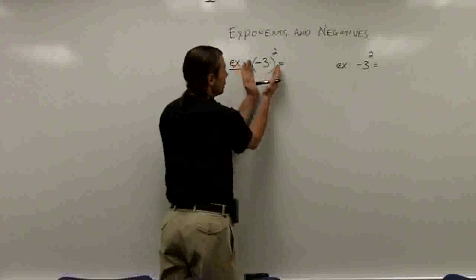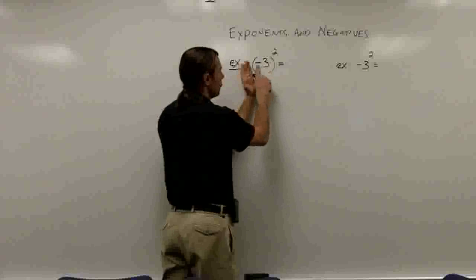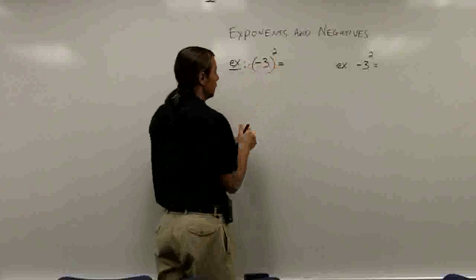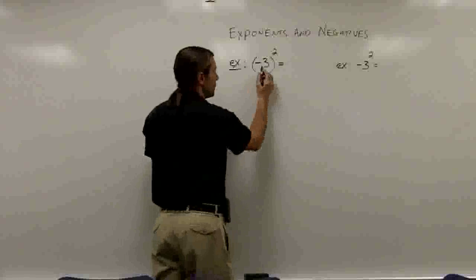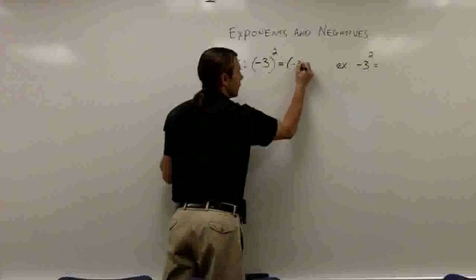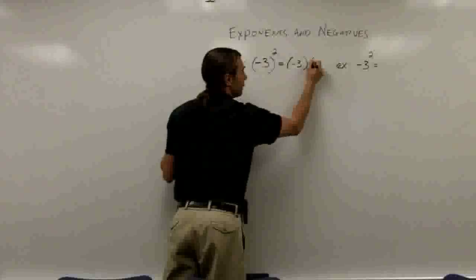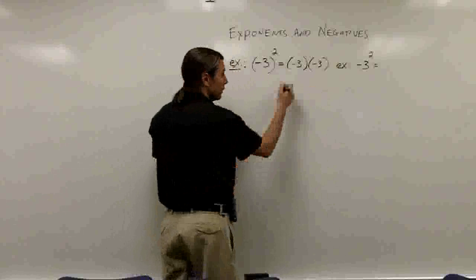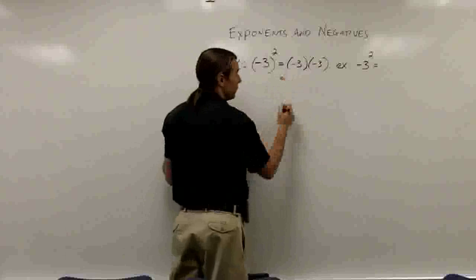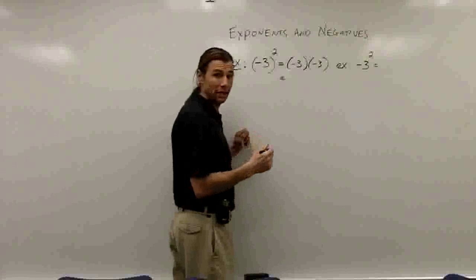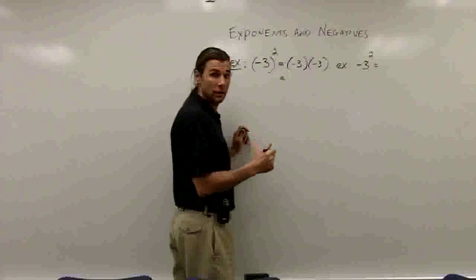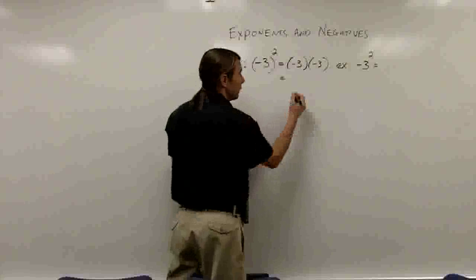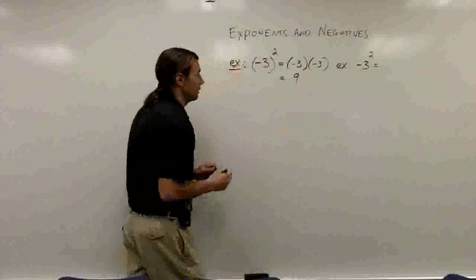If negative 3 is in parentheses, it means that both the negative and the 3 are being taken to the second power. So I have to take negative 3 times negative 3. When I multiply a negative times a negative, I have the same signs, so that's going to give me a positive answer — in this case, positive 9.